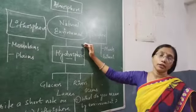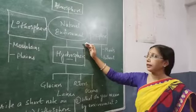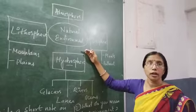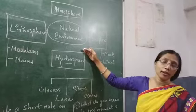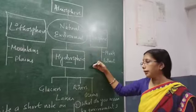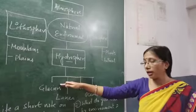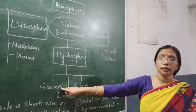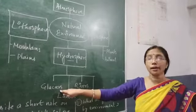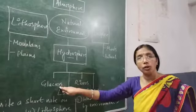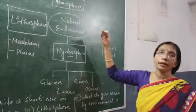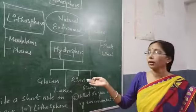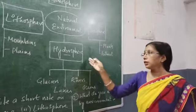Next is the hydrosphere, which refers to water bodies. Everywhere that water is present is known as the hydrosphere. Water is present in rivers, lakes, oceans, and glaciers. Our earth has a large amount of water stored in glaciers as solid form. Water vapour present in the air is also part of the hydrosphere.